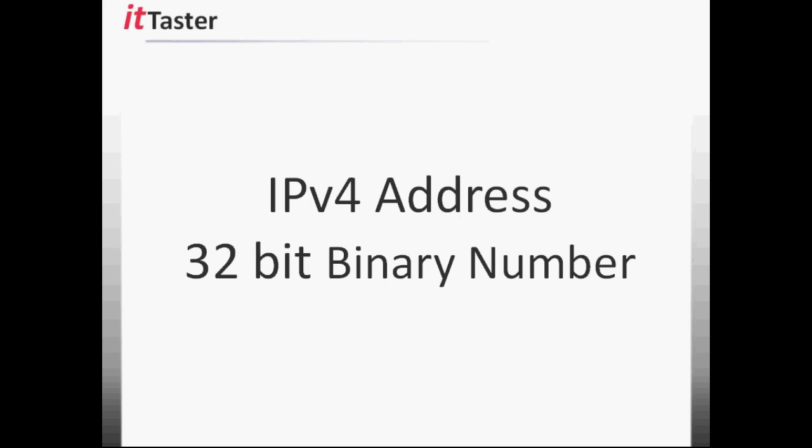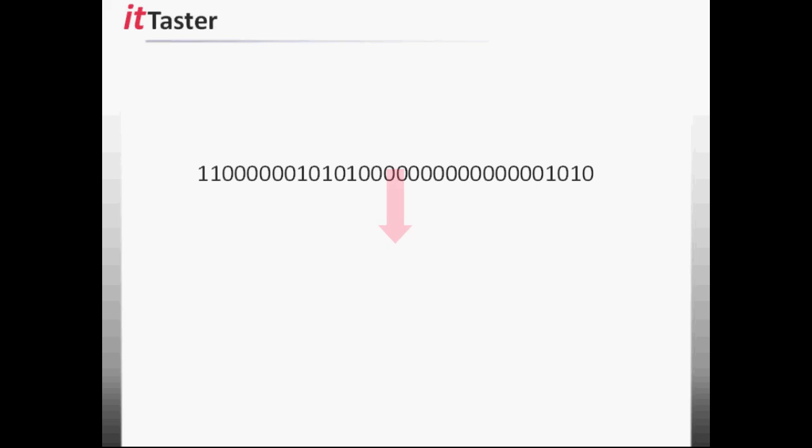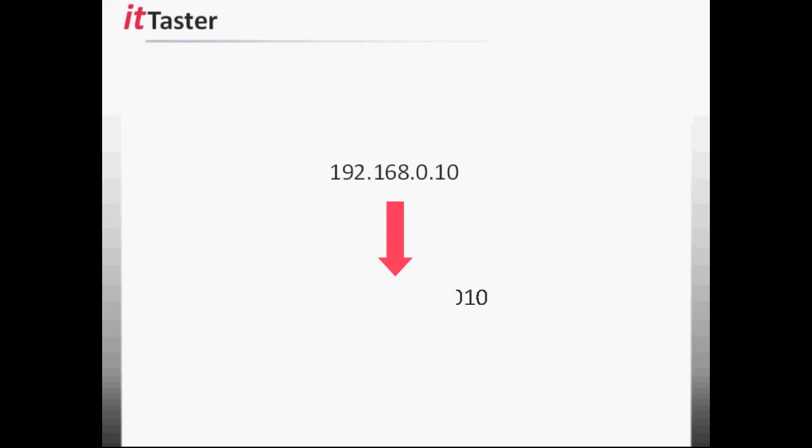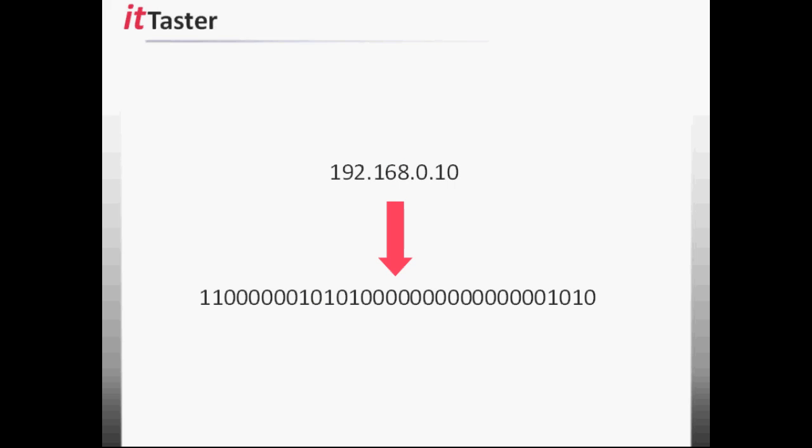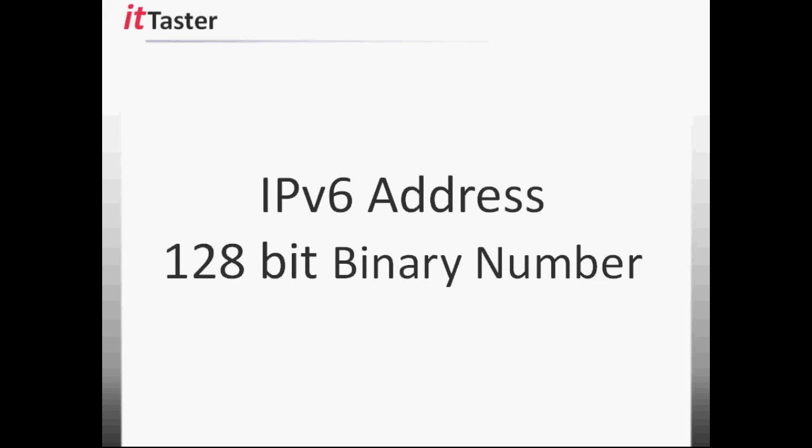As a network professional you must have a good understanding of binary. You'll need to be able to convert an address in binary format to decimal and vice versa. And when you move on to IP version 6 addresses, which are 128-bit binary numbers, your binary knowledge will be needed again. If you're not too familiar with binary or need a quick refresher, take a look at the introduction to binary video on the IT Taster channel.